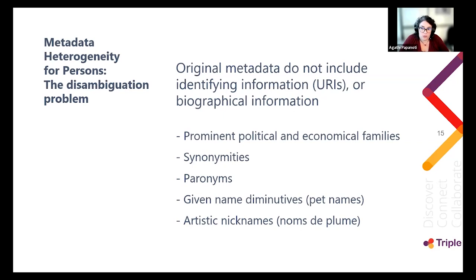In 2020, we tackled the issue of metadata heterogeneity in personal names. In the vast majority of our collections, references to persons are done with their names alone, without explicit identifying information, making the disambiguation process very difficult. The curator must consider other metadata such as type, date, or even the cultural object itself. Additional challenges include reviewing members of the same family, synonymity due to common surnames — such as Rossi in Italy, Smith in the UK, or Papadopoulos in Greece — as well as paronyms, pet names, and artistic nicknames.